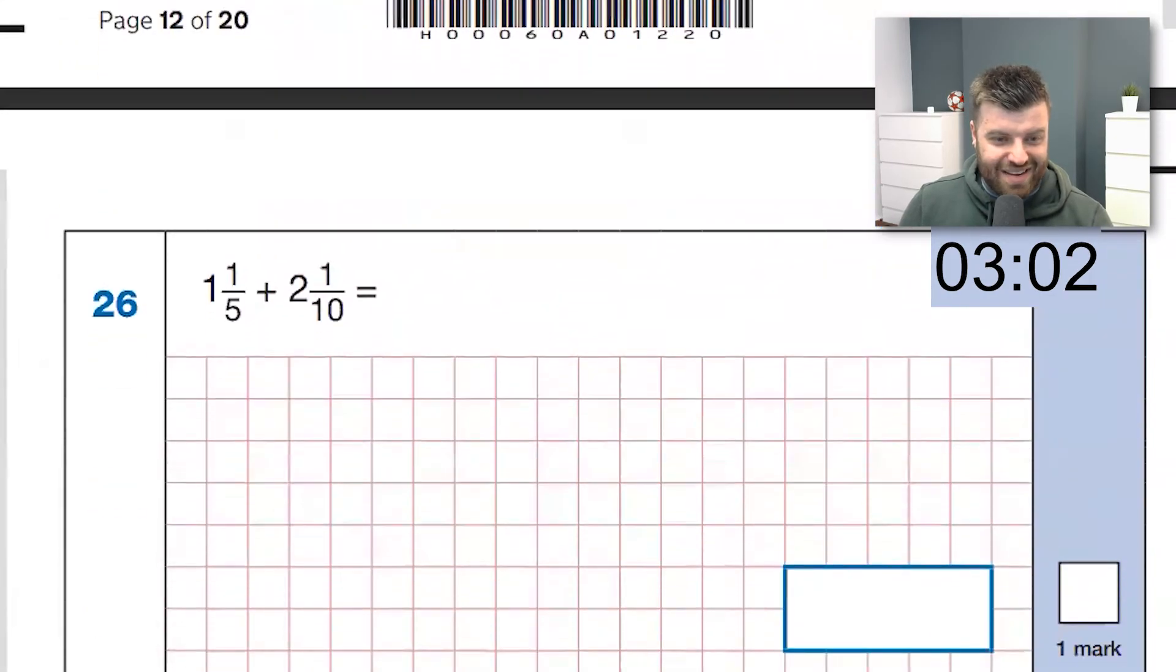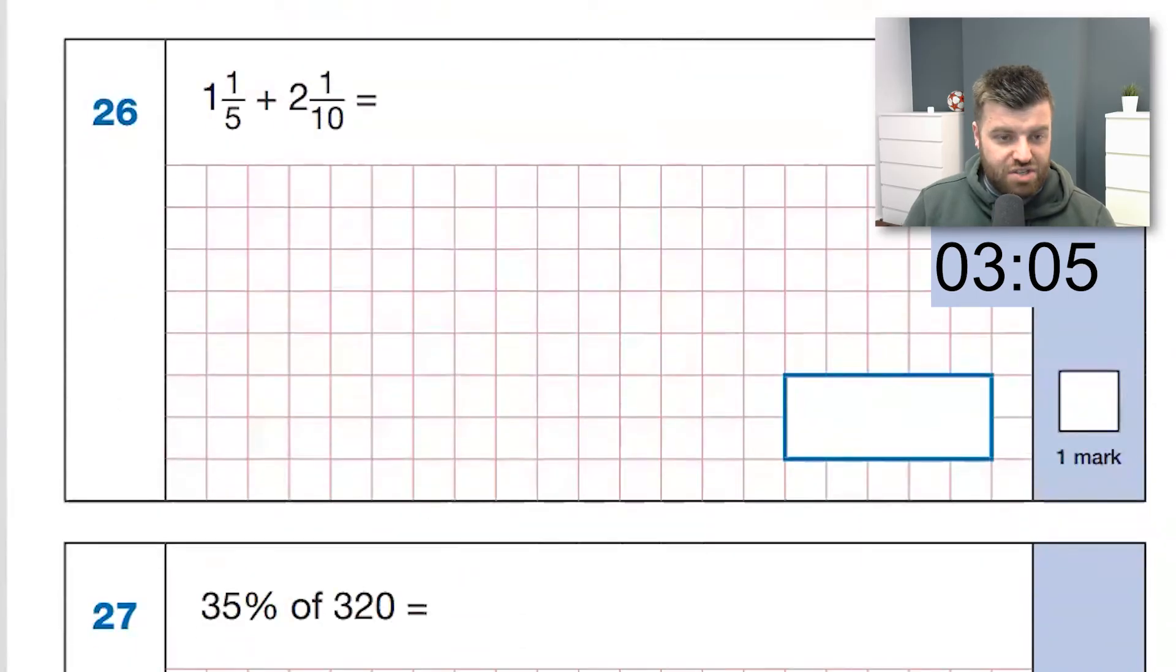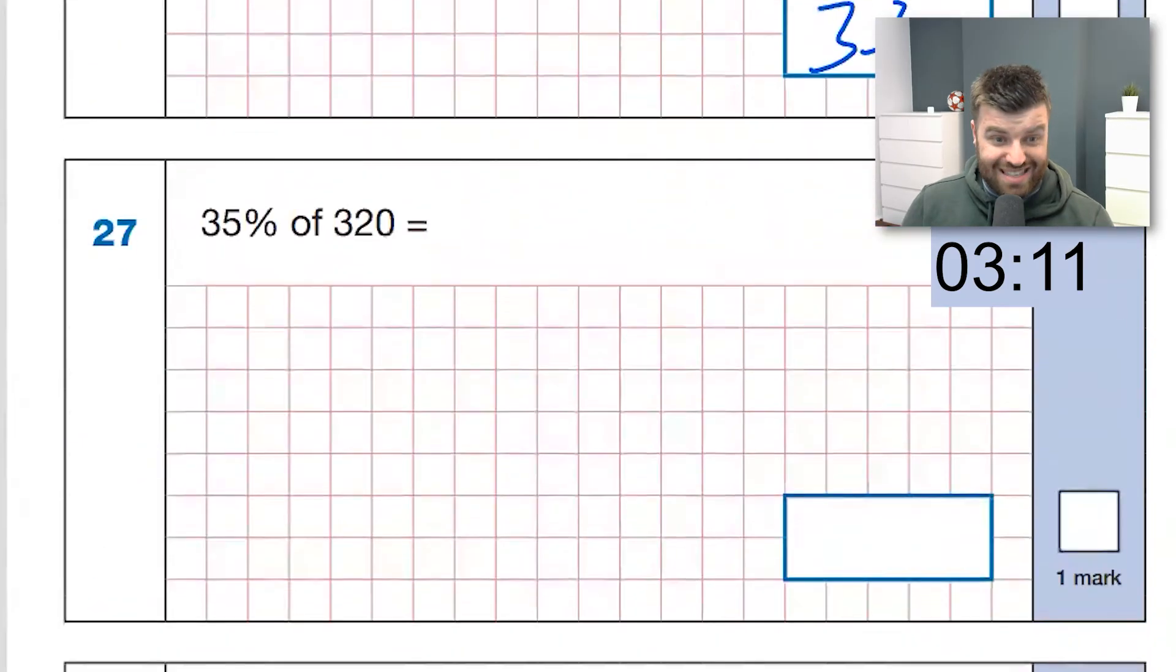Question 26. Okay, denominator is different. Again, let me just scroll it down a bit. One-fifth, let's change it to one and two-tenths. Add on two and one-tenths. That's three holes and three-tenths as a mixed number.